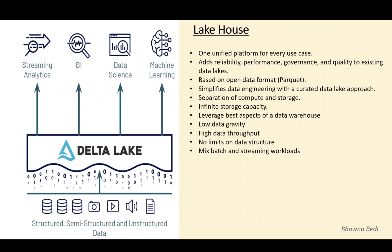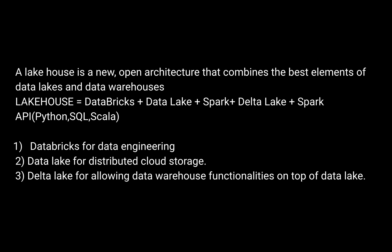Technically, a lakehouse is exactly your data lake but with a layer of Delta Lake on top of it. If you add a layer of Delta Lake to a data lake, it becomes a lakehouse. Using Delta Lake, it becomes ACID compliant, which solves a lot of problems — throughput increases, you can do upserts, updates, inserts, and deletes very fast on the data lake without any issues. It gives you lineage, maintains history, maintains transaction logs, and makes streaming very easy.